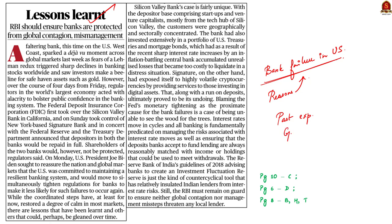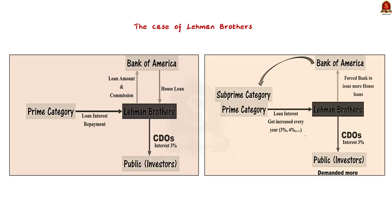There are global measures because bank failures are not harmless. It affects the owners of the banks, employees and the customers also. To understand this further, we'll see a case — the case of Lehman Brothers that triggered the 2008 financial crisis. This is a popular case and you can quote this in your main answer as well.